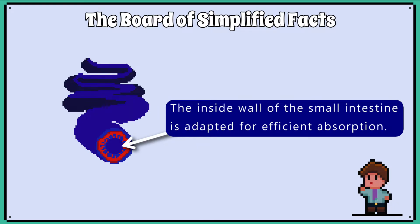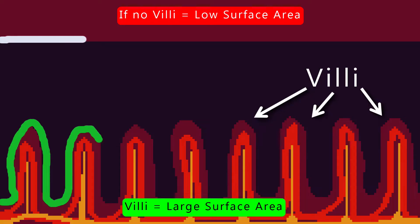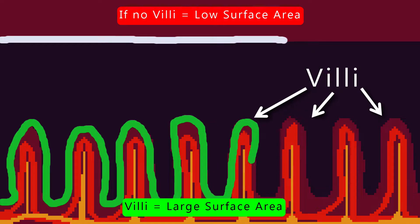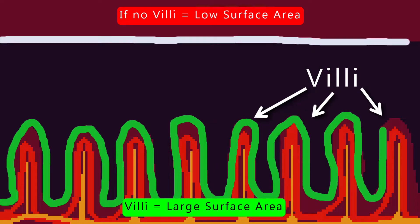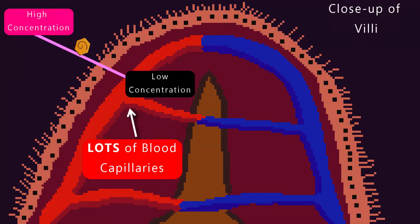The small intestine has the following adaptations for efficient absorption. It has a large surface area which is generated by the special projections the small intestinal wall has called villi. They also have a rich blood supply which maintains a steep diffusion gradient.